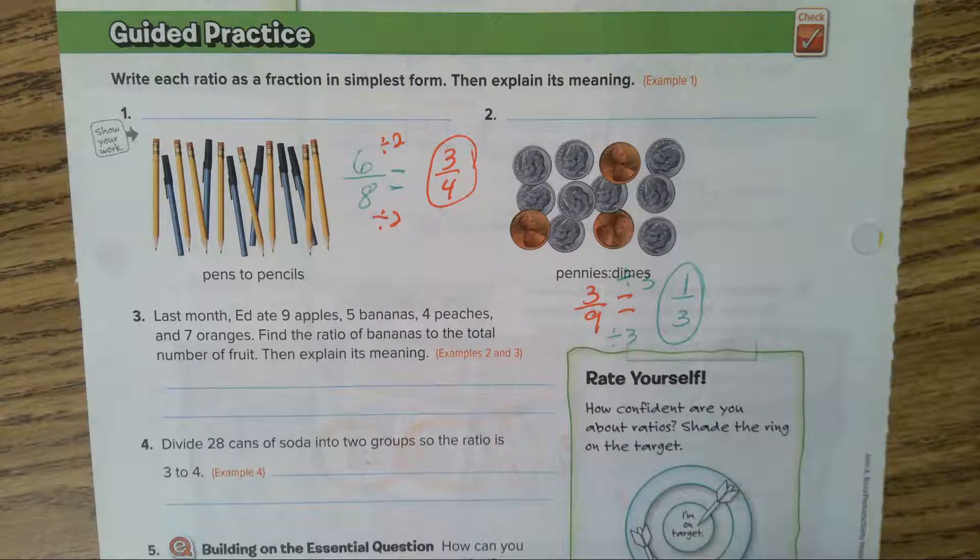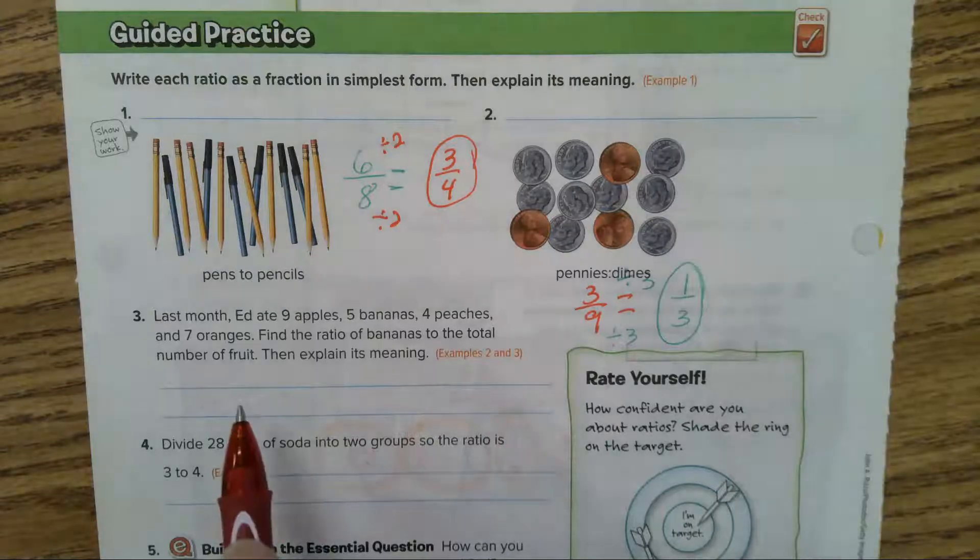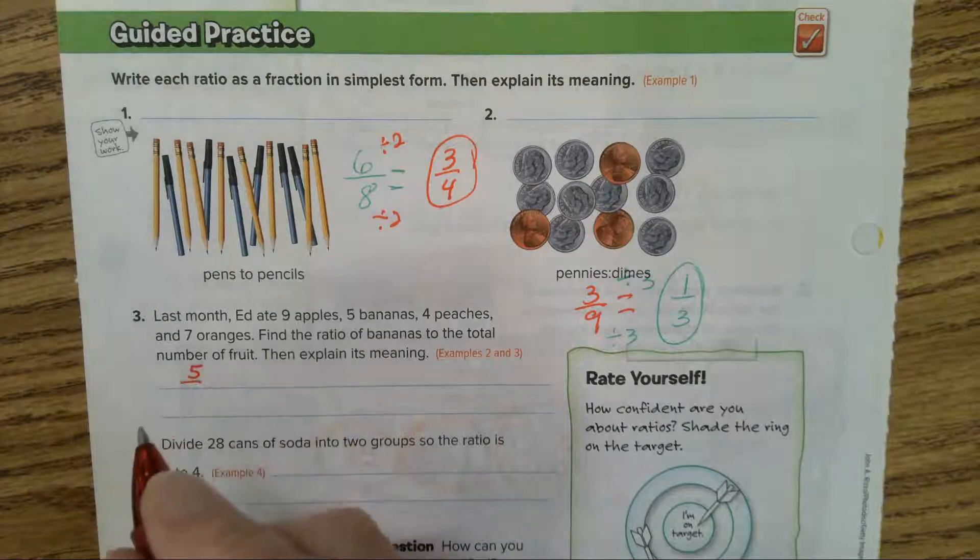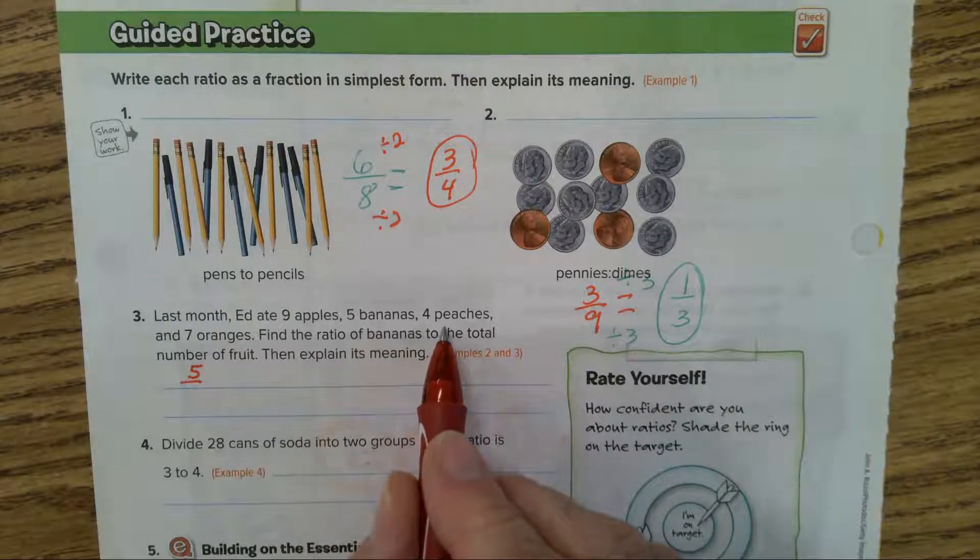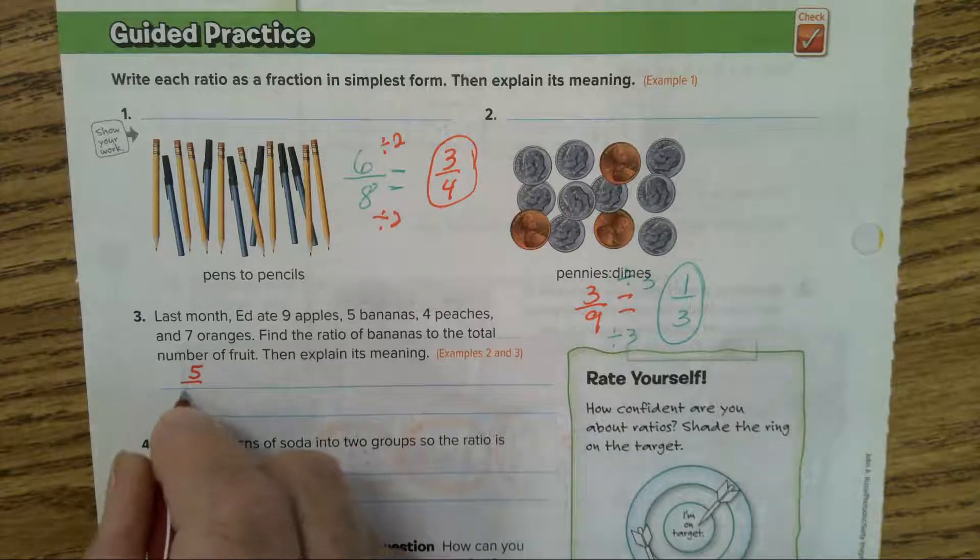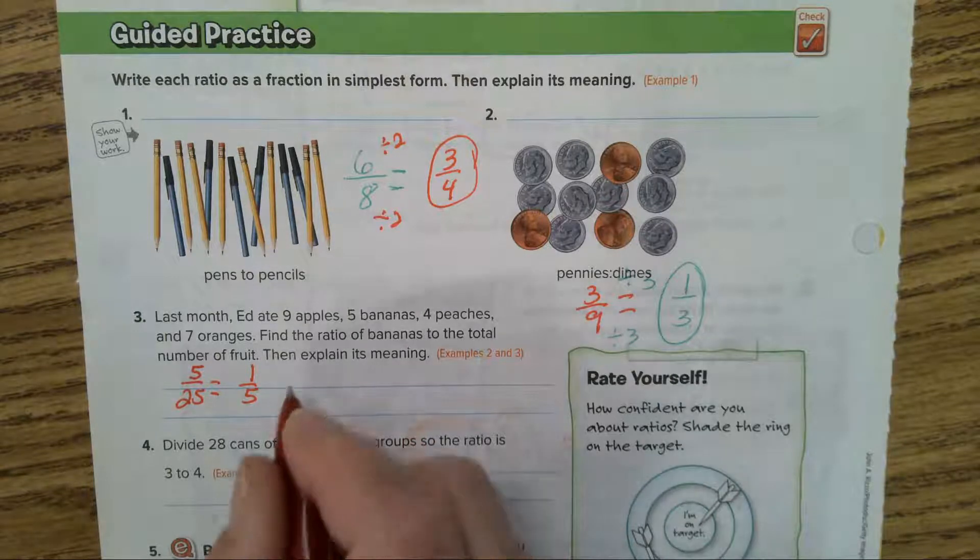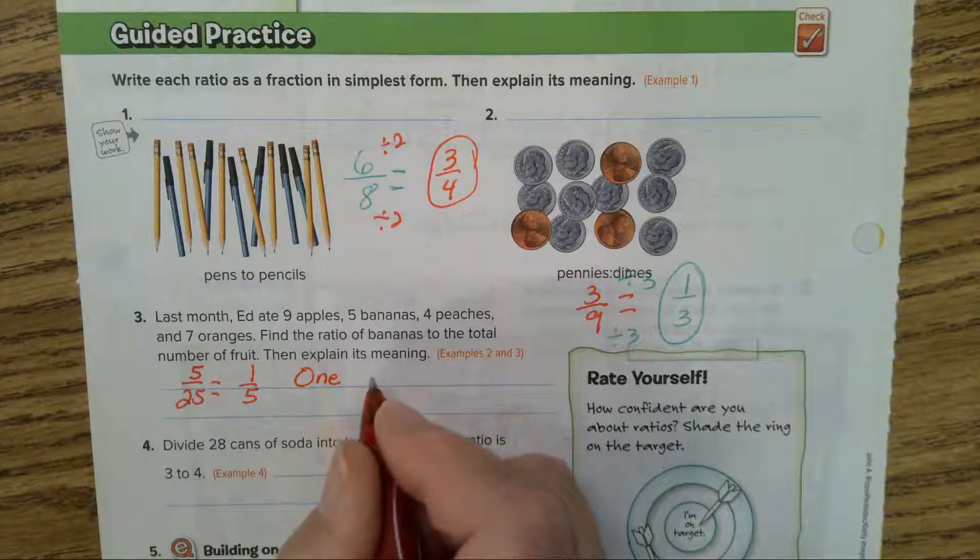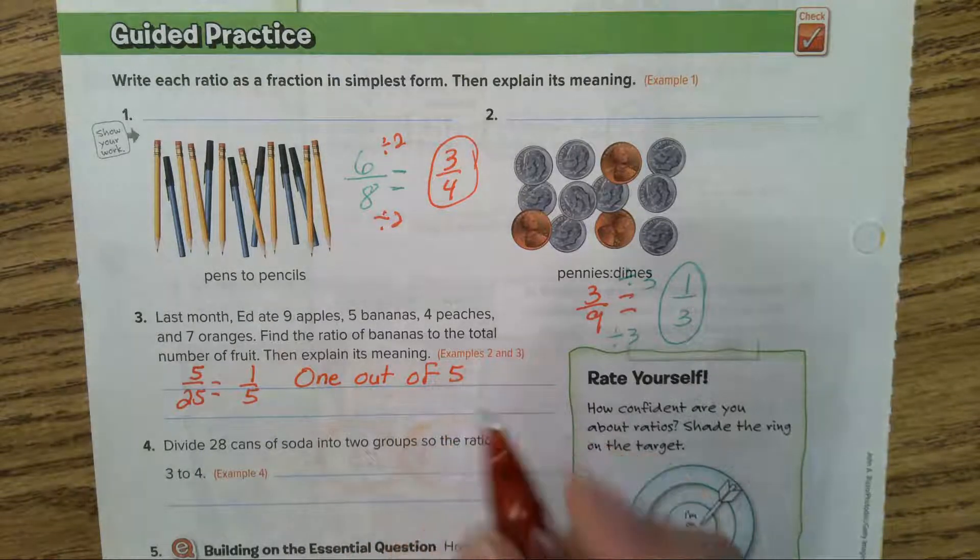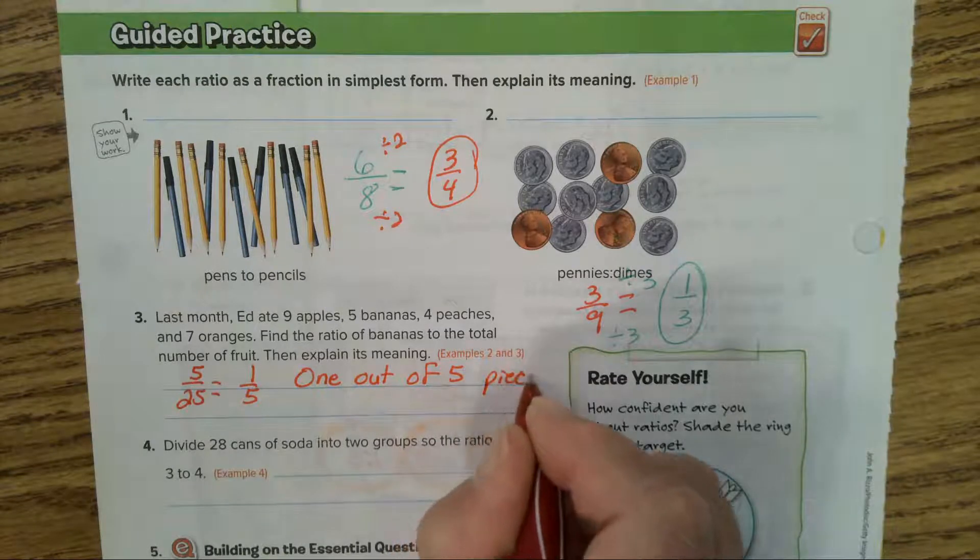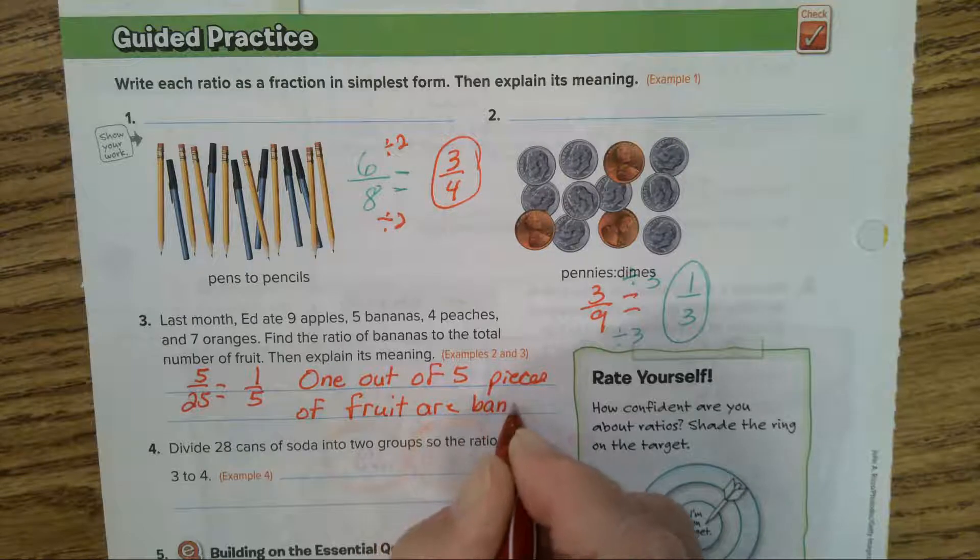Problem number 3. Last month Ed ate 9 apples, 5 bananas, 4 peaches, and 7 oranges. Find the ratio of bananas to the total number of fruit then explain its meaning. Bananas, you have 5 bananas. We have to add them all together. 9 plus 5 is 14 plus 4 is 18 plus 7 is 25. 5 out of 25 simplifies to 1/5. Let's write it out: 1 out of 5 pieces of fruit are bananas.